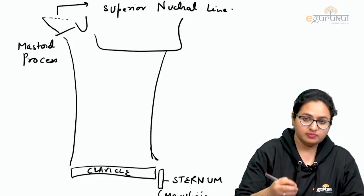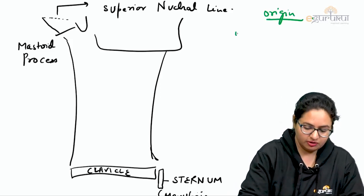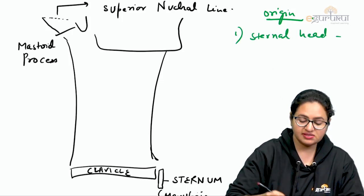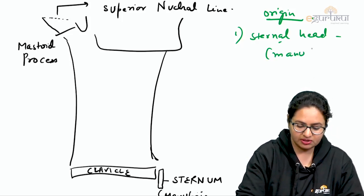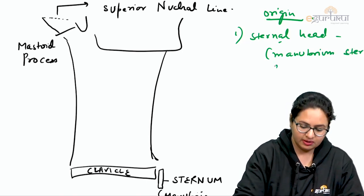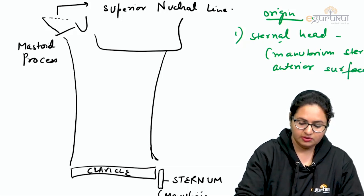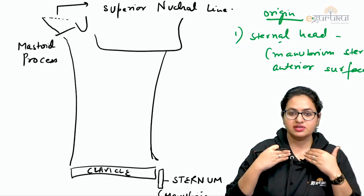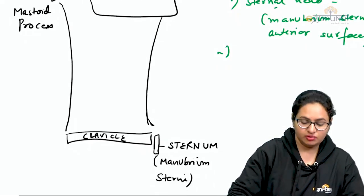The sternocleidomastoid muscle has two heads of origin. The first is the sternal head — as the name suggests, it arises from the sternum, and more specifically from the entire surface of the manubrium sterni. Towards the lateral side, for both the right and left sternocleidomastoid, the second head of origin is the clavicular head.